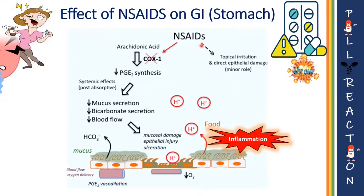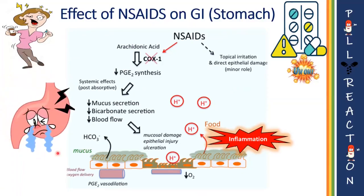Gastric acid is highly acidic in nature. If this highly acidic substance comes in direct contact with GI cells, the cells will get eroded. To prevent this, our body produces mucous secretion, which acts as a barrier between our GI cells and gastric acid. When NSAIDs are taken, they inhibit prostaglandin E2 synthesis in the stomach, resulting in less or no mucus secretion, less bicarbonate secretion, and decreased blood flow to the GI mucosal cells, ultimately resulting in mucosal damage by gastric acid.